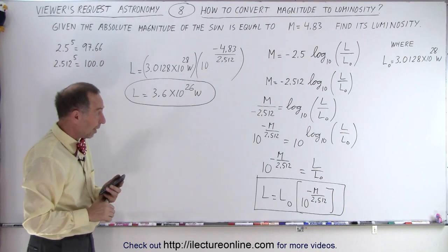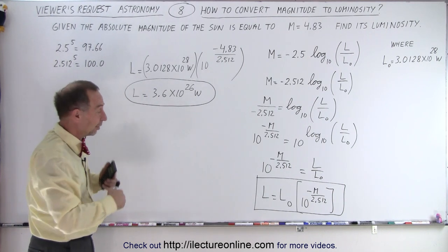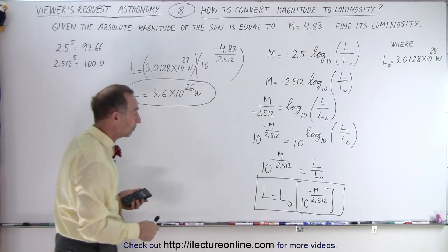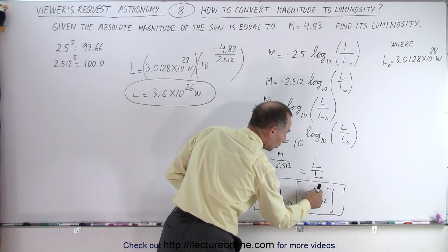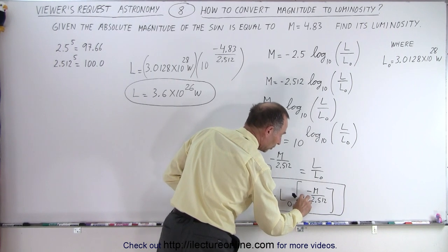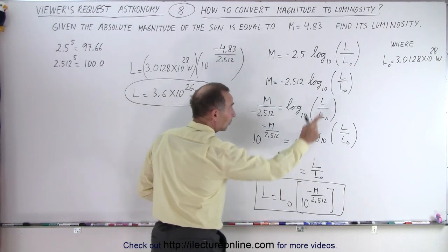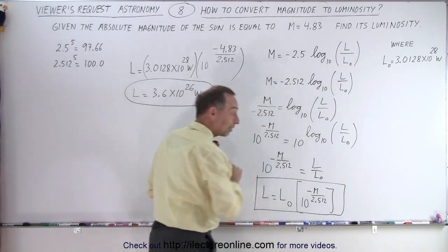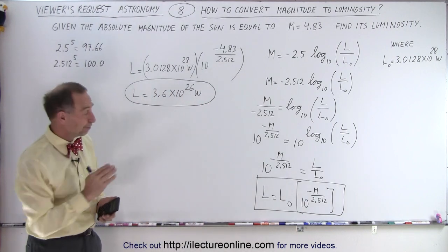So now this is how we use the very same process to find the luminosity of any star. All we have to do is plug in the magnitude of the star divided by 2.512, put a negative in front, make that as the exponent of the number 10, multiply times the base luminosity, and we get the luminosity of any star. And that is how it's done.